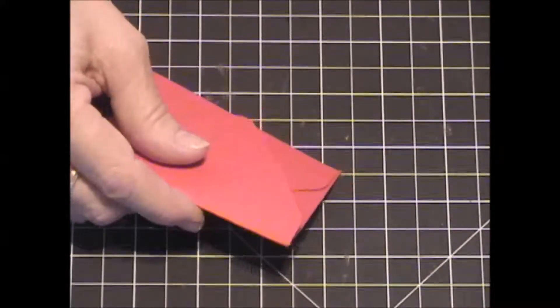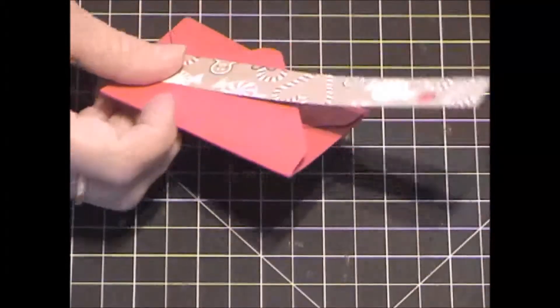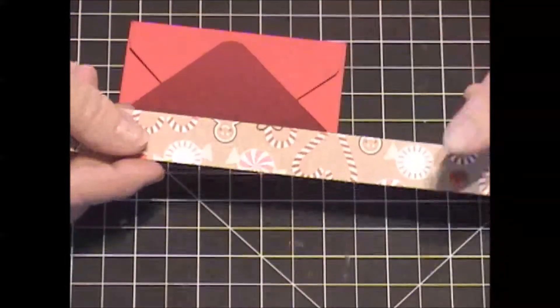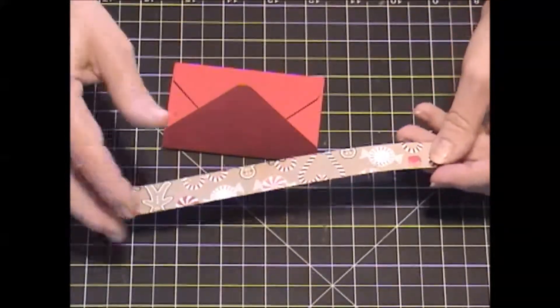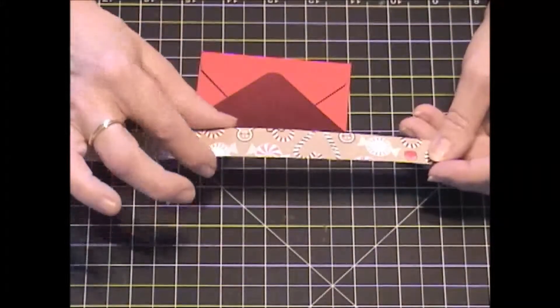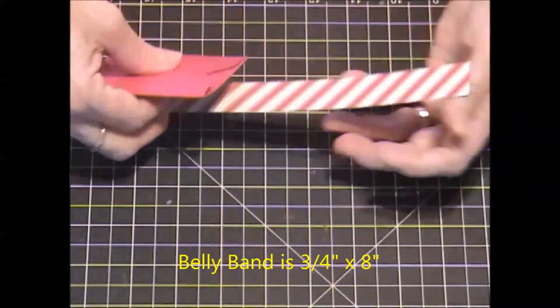Now we're going to make a belly band. And this is going to be a Christmas one. So we're going to take a piece of paper here that is eight inches long by three-quarters inch wide. And we're going to turn our card over, turn this over.